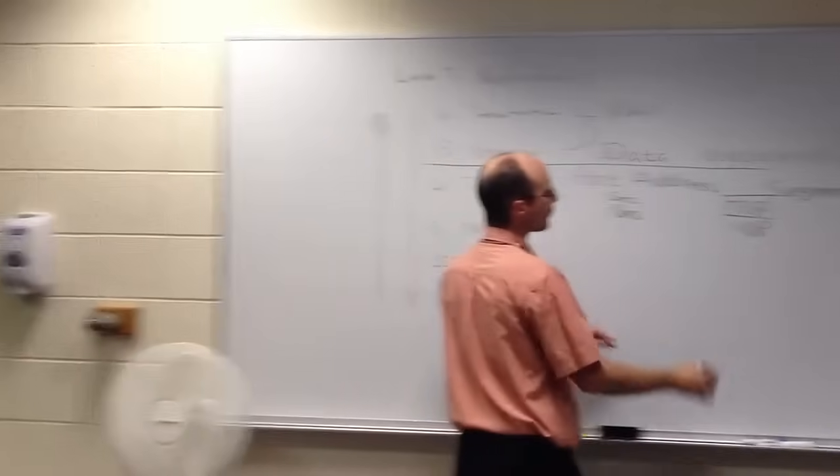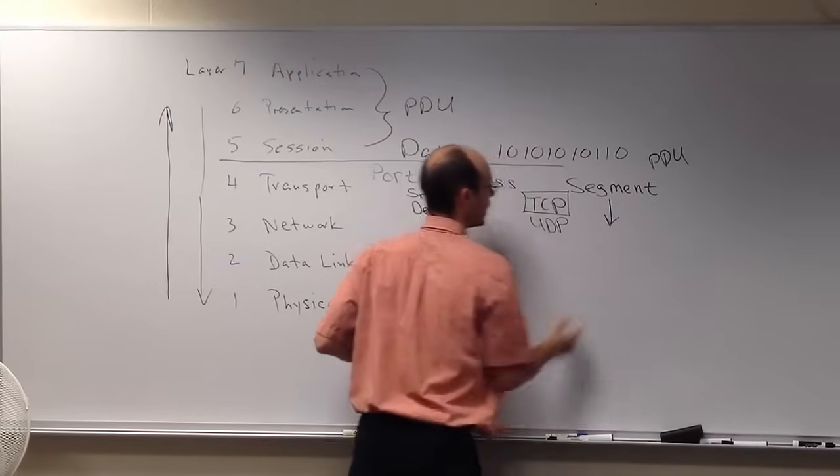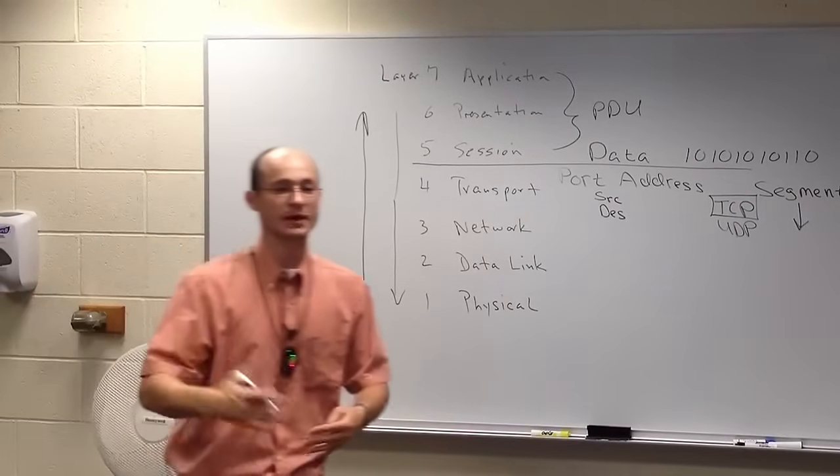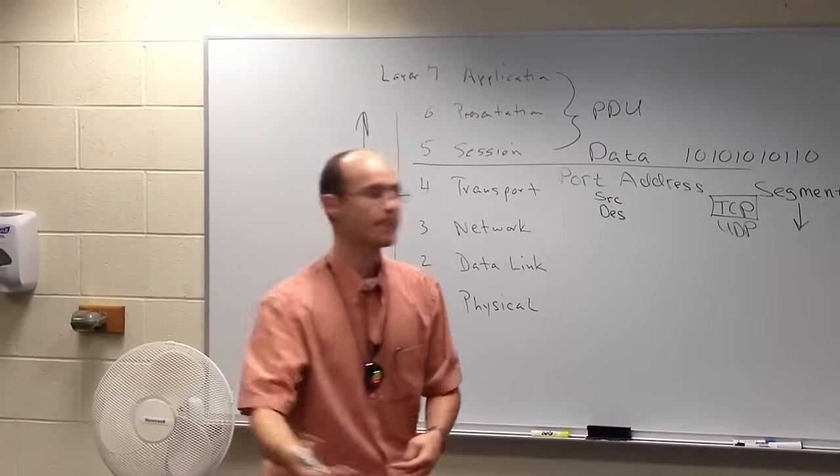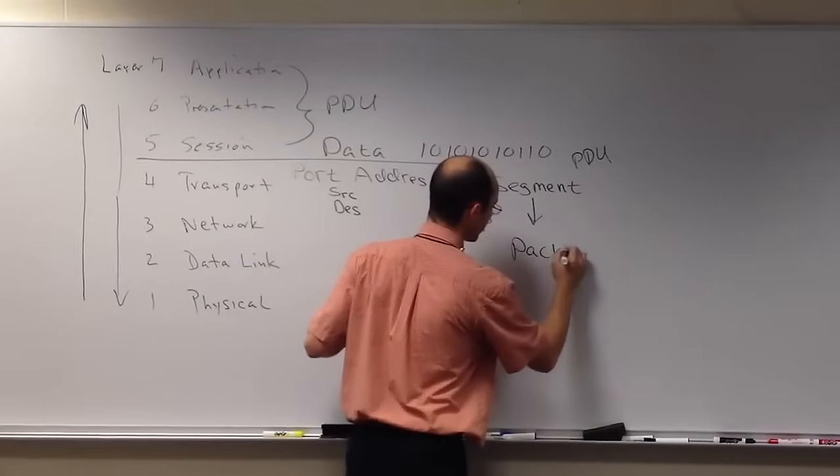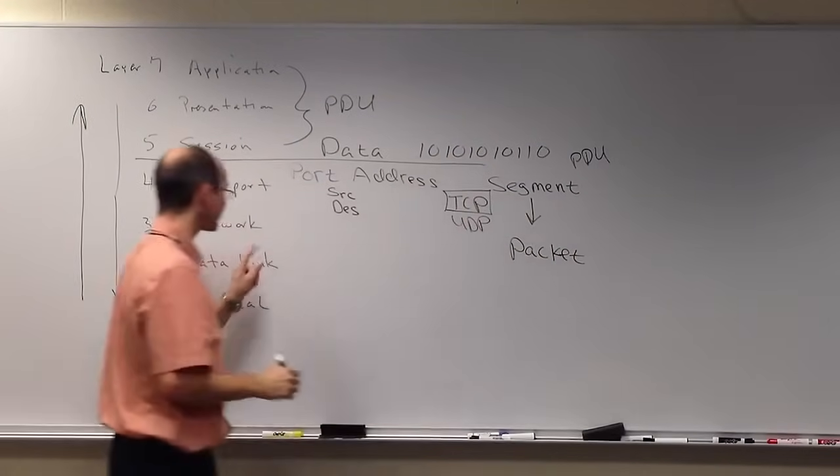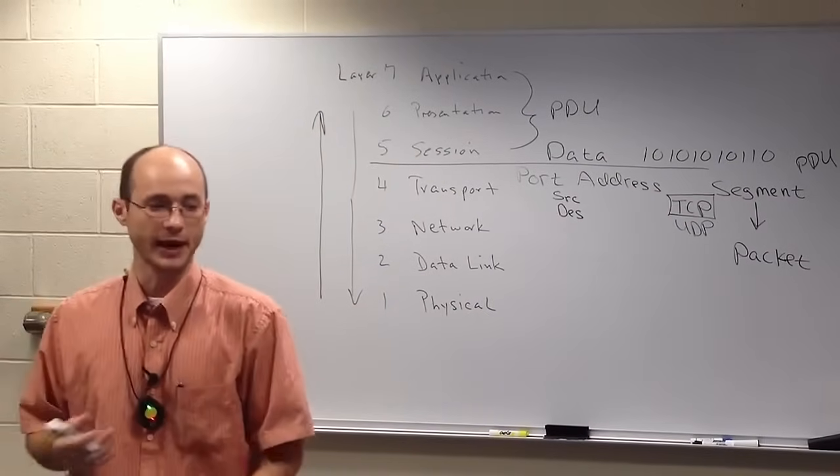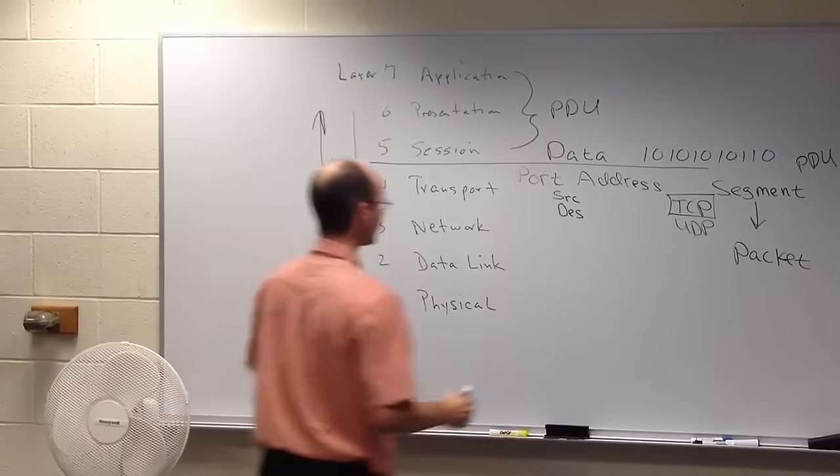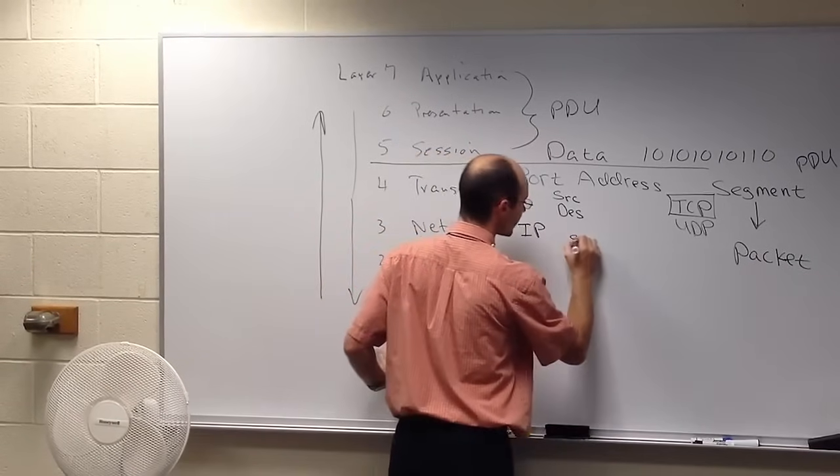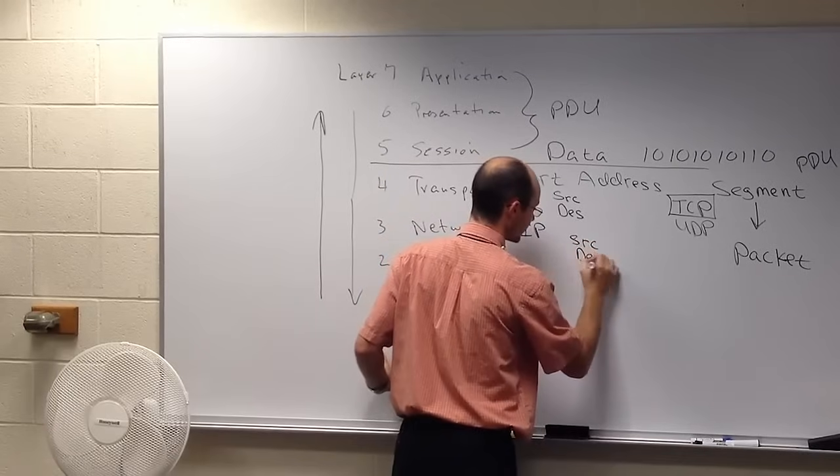All right, we passed that segment down to the network layer, and what is that network layer going to produce? What are we going to take that segment and make it into? A packet. And what is one of the most popular protocols on this layer that tells the operating system how to take a segment and make it into a packet? IP. IP. And with IP, we have a source and a destination address.